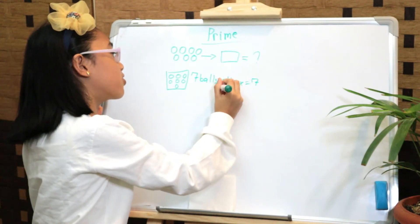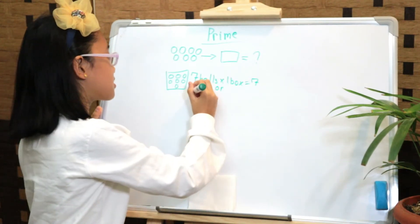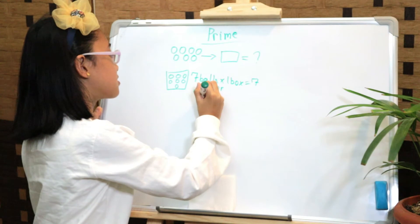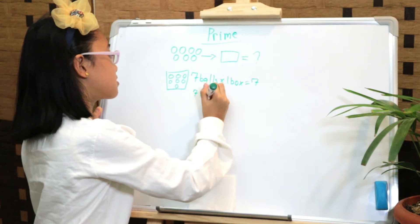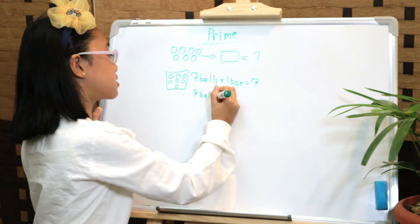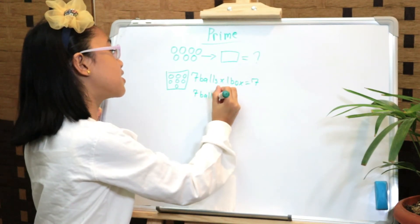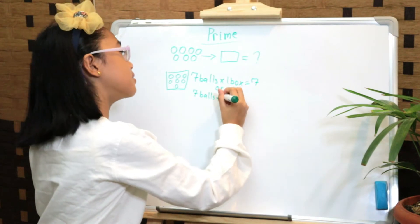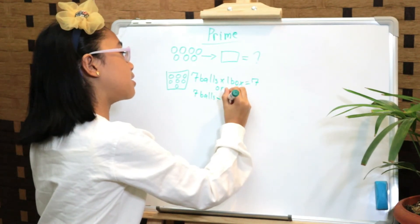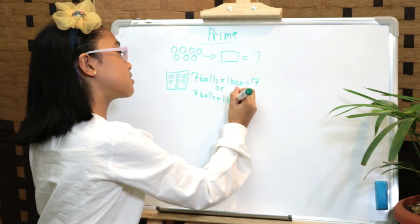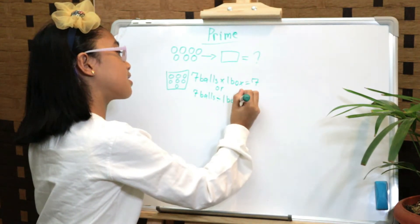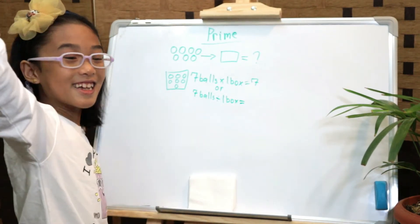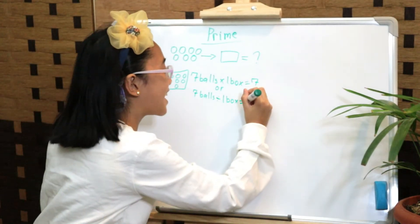Seven balls divided by one box equals — you guessed it again — seven!